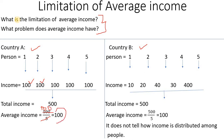So in Country A, the per capita income — let's call it P.C.I. — the per capita income is 100 rupees.